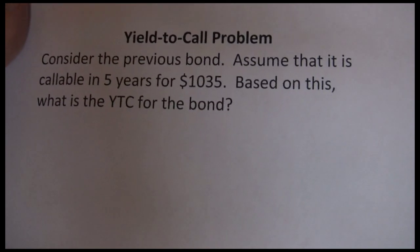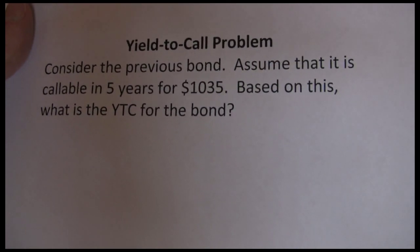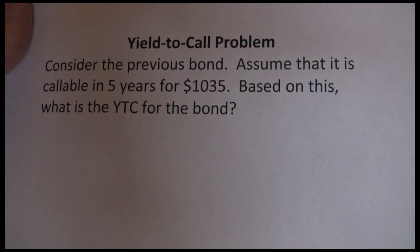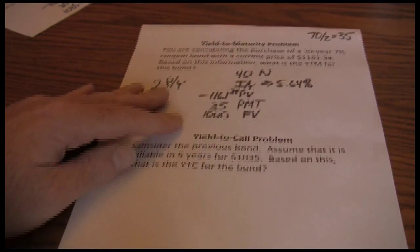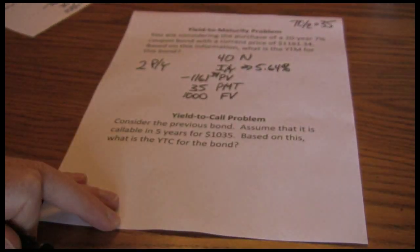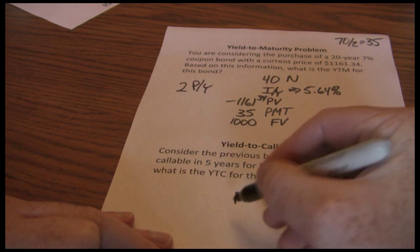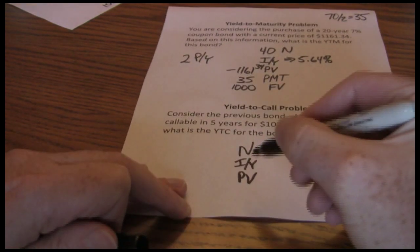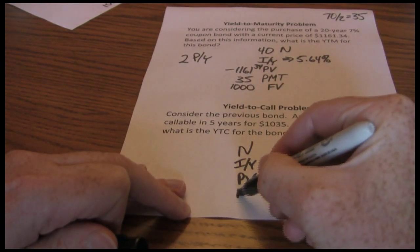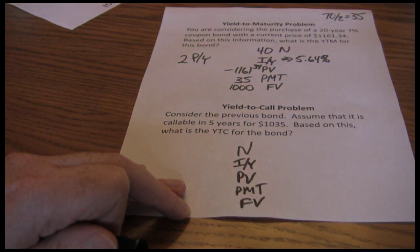The process for yield to call is very similar to yield to maturity. We're going to use the five-key approach and we're going to solve for the interest rate, which is our rate of return. So we want to set up our N, I/Y, PV, PMT, and FV.